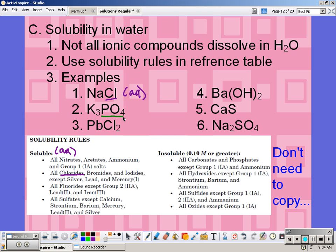Potassium phosphate. So I'm looking at my rules for phosphates. All phosphates except group 1. So all phosphates would be insoluble, remaining as a solid, unless it's with group 1. And since we are with group 1, this is now aqueous.